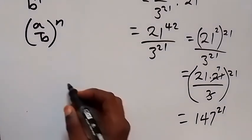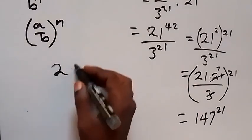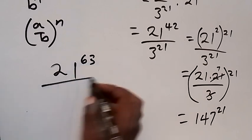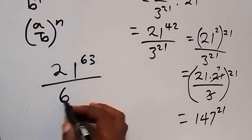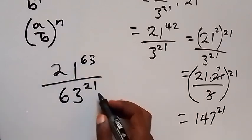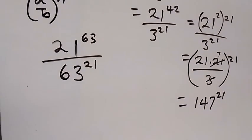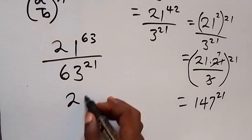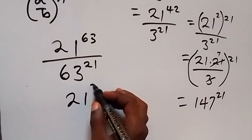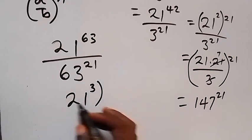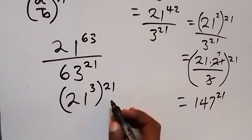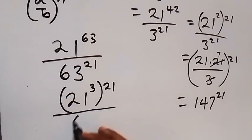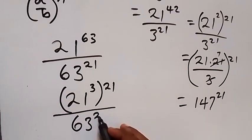Also, to do it in another way: we have 21 raised to power 63 divided by 63 raised to power 21. Here, we can write this as 21 raised to power 3, then raised to power 21, because 3 times 21 gives us 63, then divide by 63 raised to power 21.